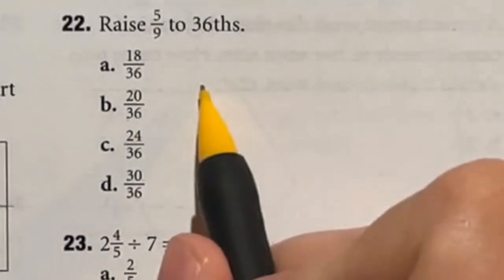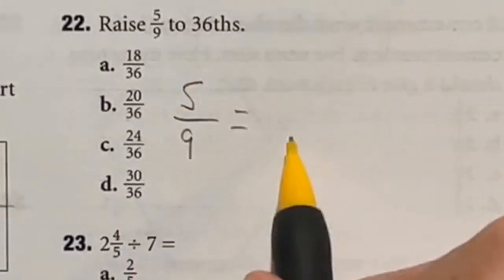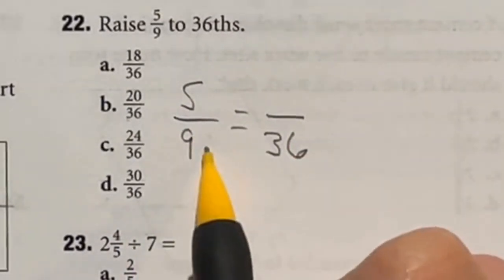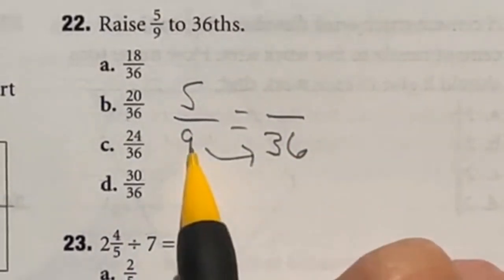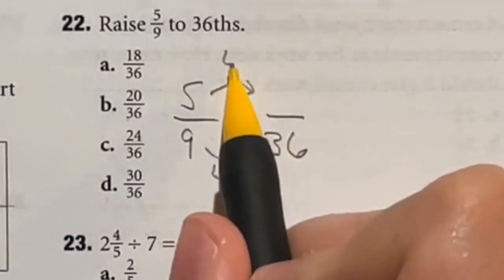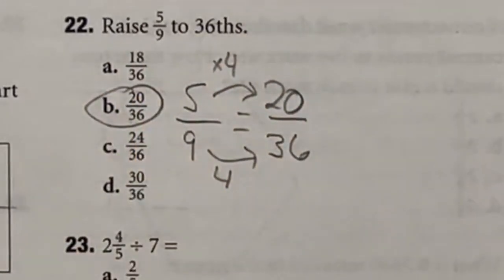So for 22 they want you to take 5 over 9 and they want it to be rewritten as a number with 36 on the bottom instead. Well to go from 9 to 36 we have to multiply by 4. So that means we have to multiply the top by 4 as well. Five times four is 20 so that means our final answer here is B.